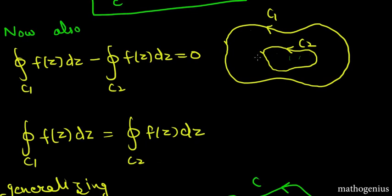This is telling us that if there is any closed curve and there is another closed curve inside it, then the integration along the outer curve equals the integration along the inner curve. This is very important for solving problems related to Cauchy's theorem and for proving many other results, so remember this well.